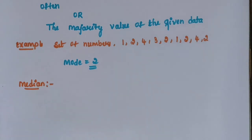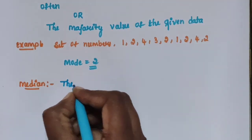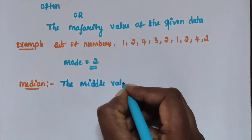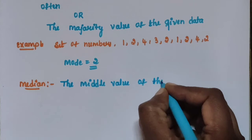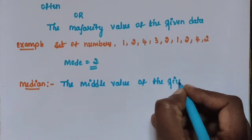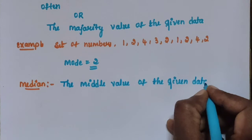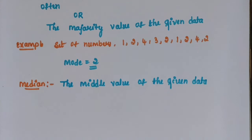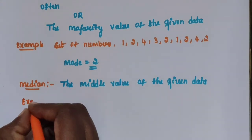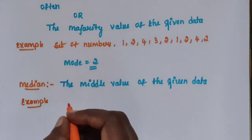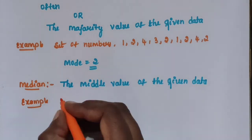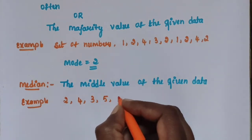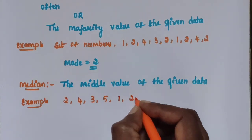The middle value of the given data is called the median. For example, set of numbers: 2, 4, 3, 5, 1, 2.